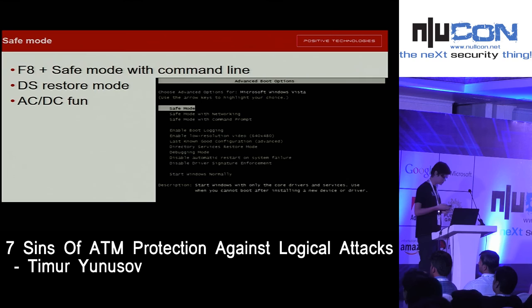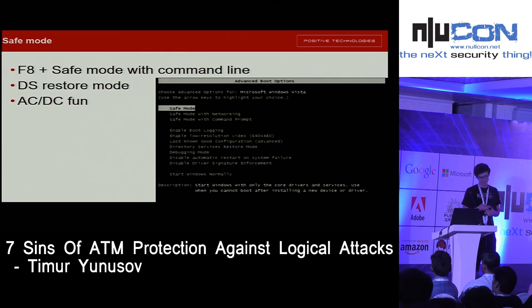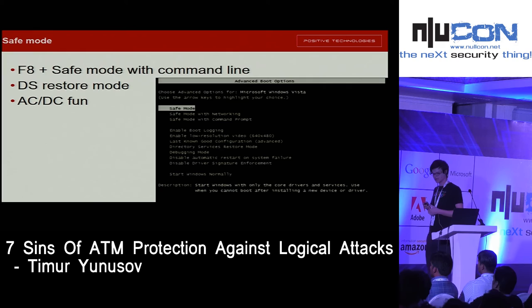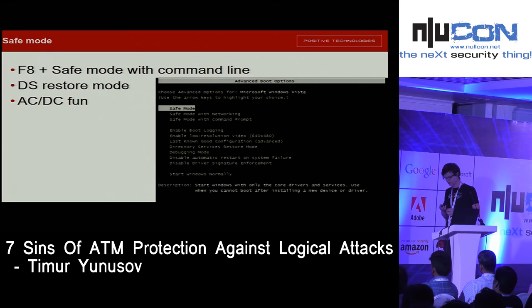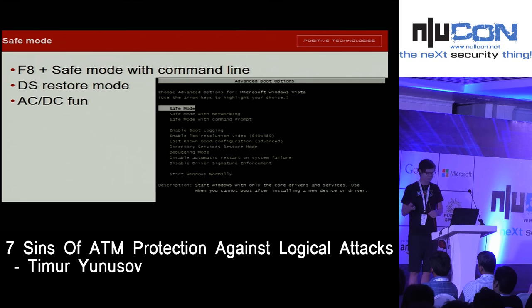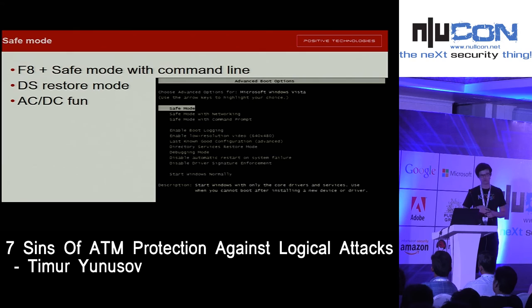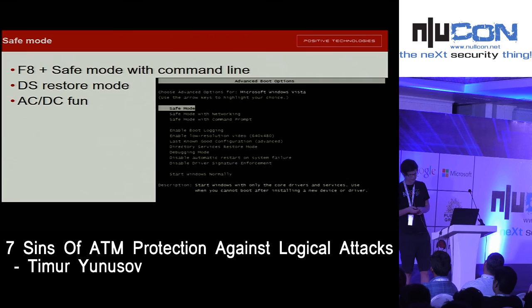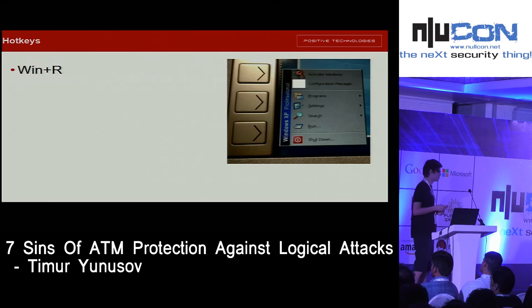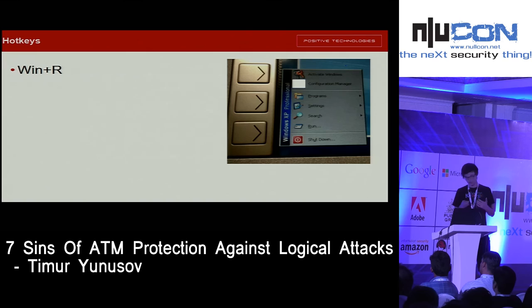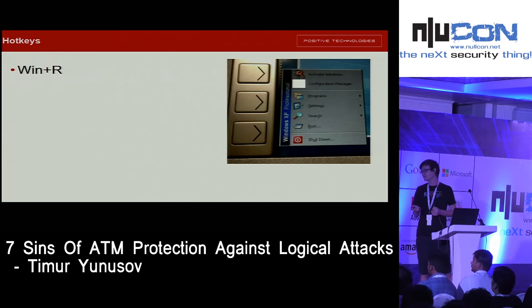At some point, ATM vendors disabled access to safe mode. But there are really a lot of other boot options — like directory service restore mode — that can still be accessed. And if the F8 window is disabled, you can simply unplug the electricity from the ATM, then plug it back in, and you'll get a message about an unsuccessful restart that can still get you into safe mode. Meanwhile, the easiest way to bypass the kiosk, as many know, is OS hotkeys. We still find ATMs that allow Win+R to call any command.